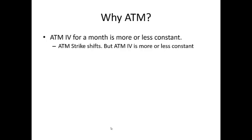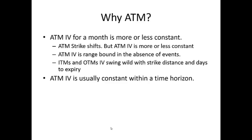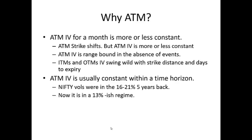ATM IV for a month is more or less constant. The ATM strike shifts, but ATM IV stays stable. ATM IV is range-bound in the absence of events, while ITM and OTM IVs swing wildly with strike distance and days to expiry. ATM IV is usually constant within a time horizon — for example, Nifty vols were in the 16 to 21% range five years ago; now they're in a 13% regime, fluctuating roughly 3% up or down. Every time we refer to volatility, we mean the at-the-money volatility.